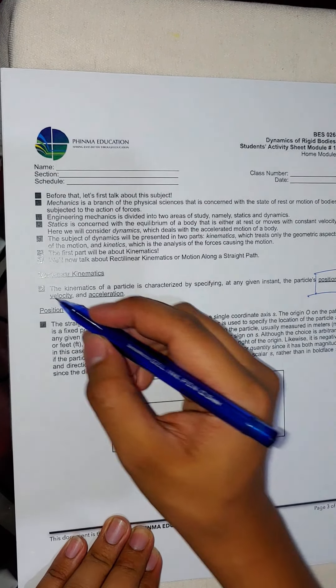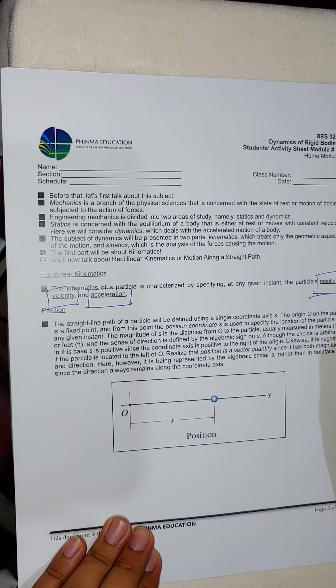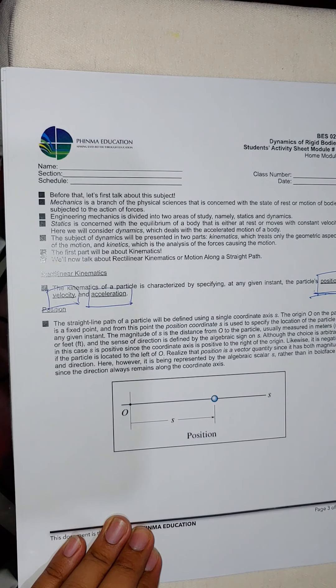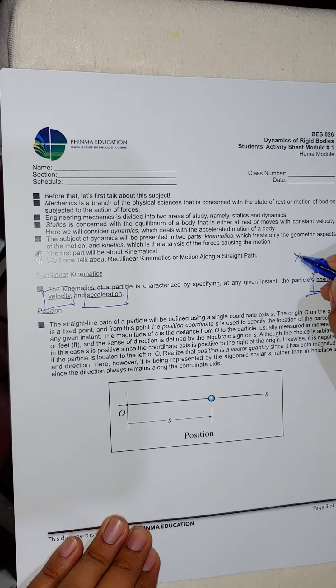In rectilinear kinematics, we talk about the particle's position, velocity, and acceleration. Position is usually denoted with x or s. Velocity is commonly symbolized as v, and acceleration as a. If we talk about acceleration due to gravity, it becomes g.